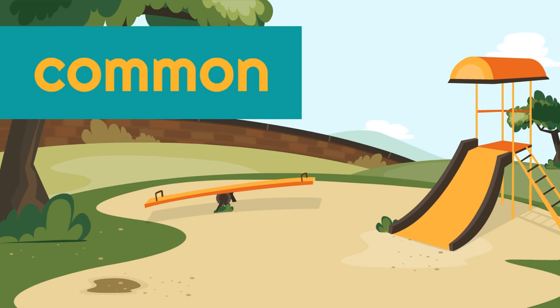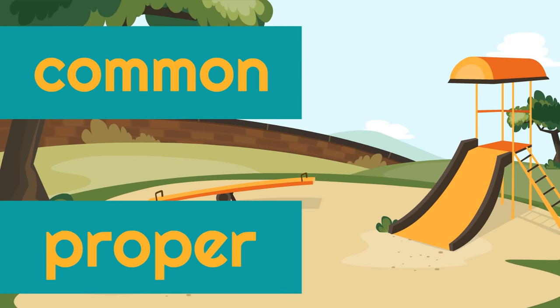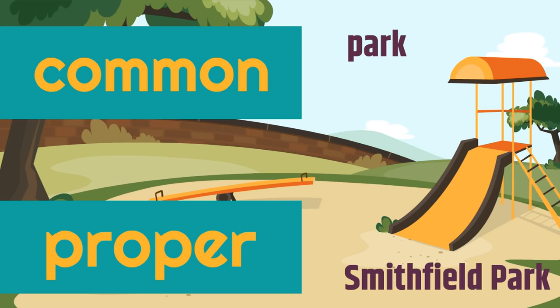Here's another one. Here we have a picture of a park. Park would be the common noun — it's the type of person, place, or thing. Now, let's say this park is called Smithfield Park. Smithfield Park would be the proper noun. It is the specific person, place, or thing that this is. It is a park — that's the common noun — and the proper noun is Smithfield Park.